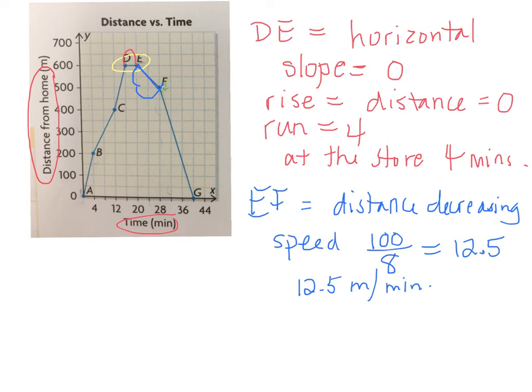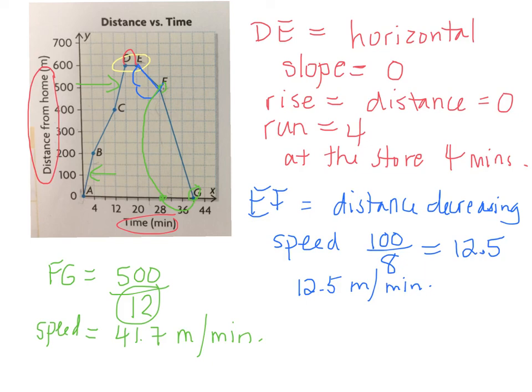Last segment of this graph goes from F to G. It looks like it's the steepest line. Let's calculate what the slope is. From F to G, we're going from 500 to 0, so he's traveling, his rise is 500. And what's the run? It goes from 28 to 40. What's 40 minus 28? 12. And what's 500 divided by 12? Approximately 41.7. So his speed here is 41.7 meters per minute. Was that the fastest speed? No. Which part was the fastest? AB and CD. So this one was a bit slower, but his speed was the steadiest. For 12 minutes he was traveling at the same speed.